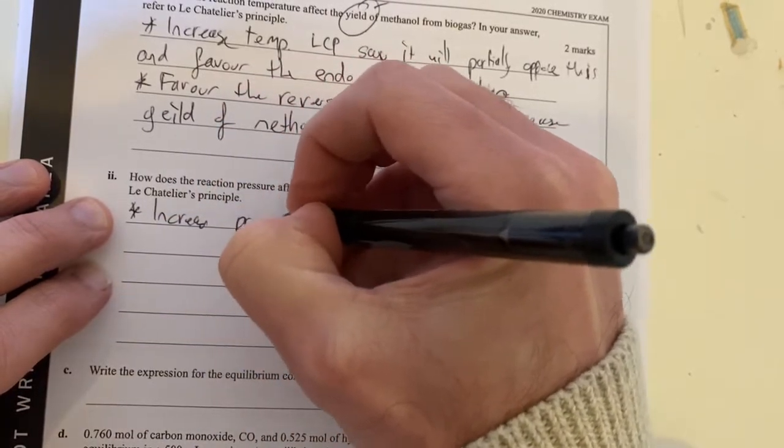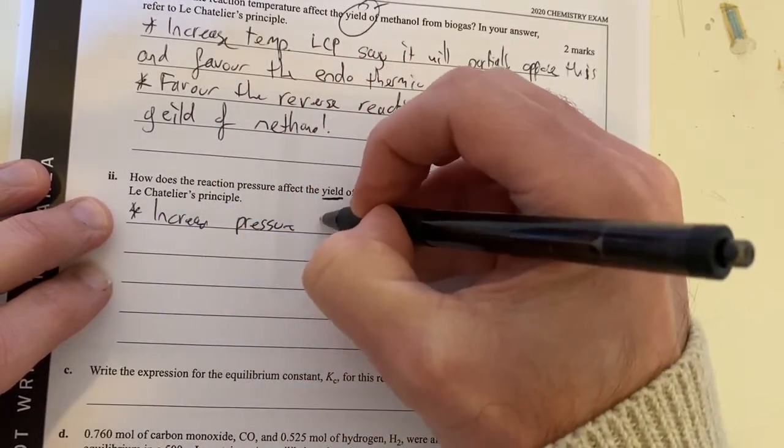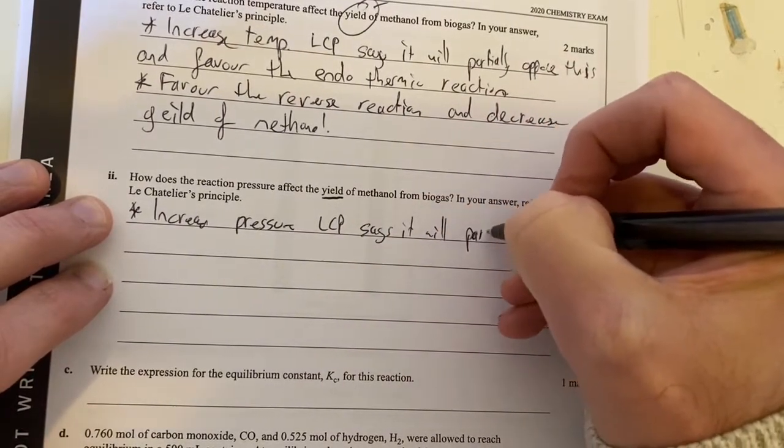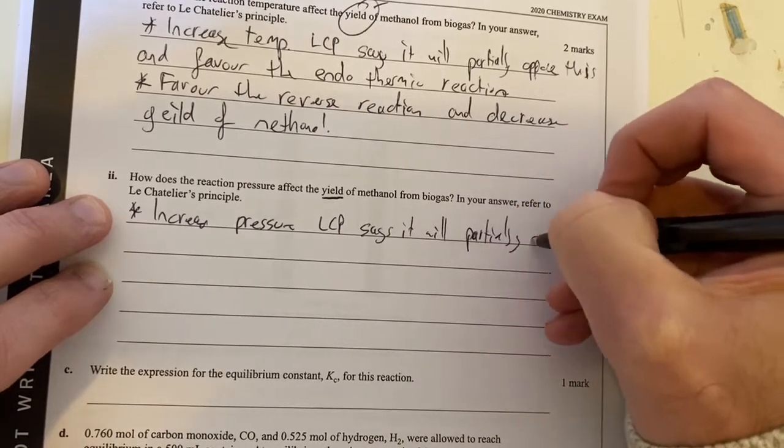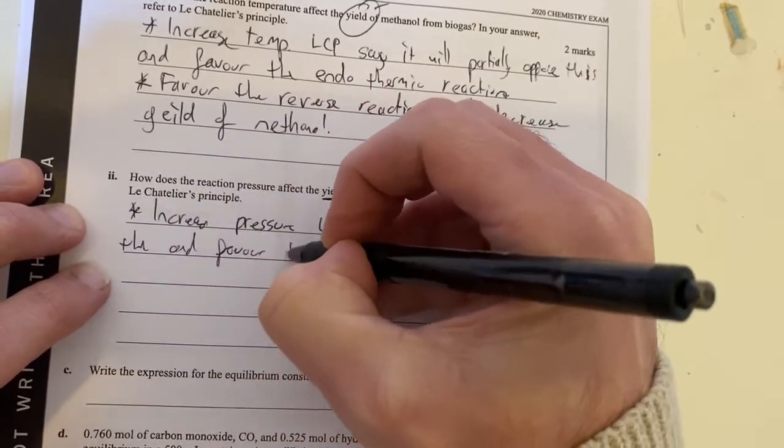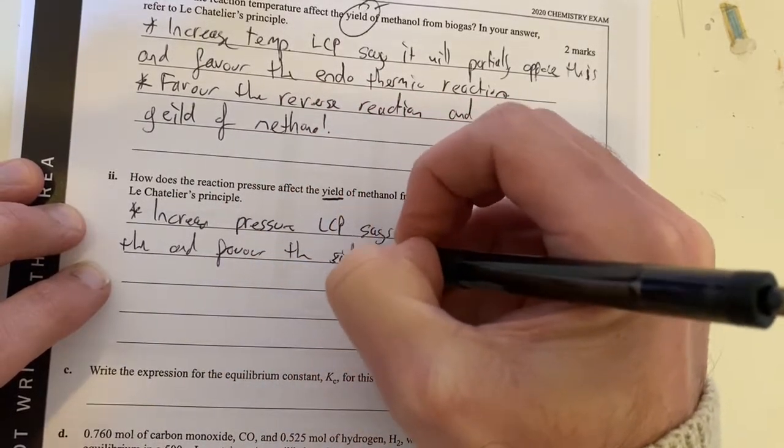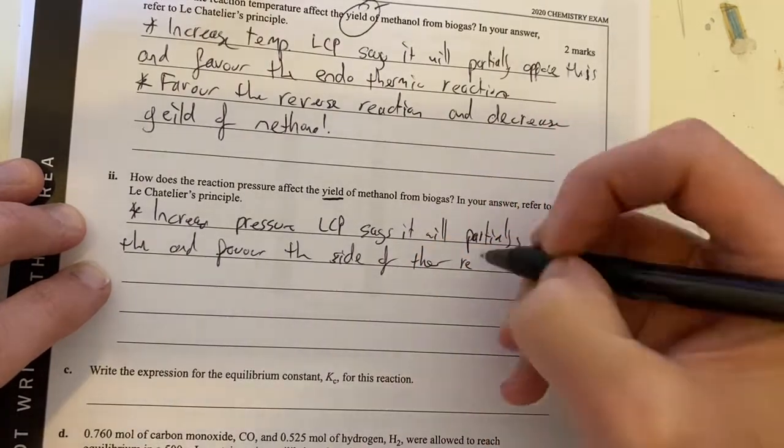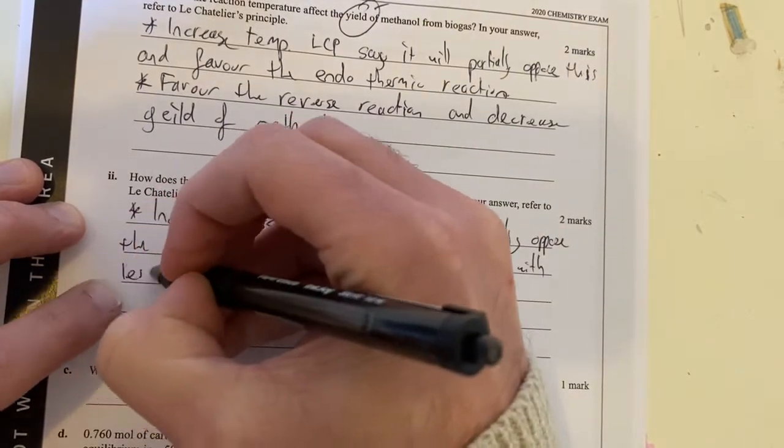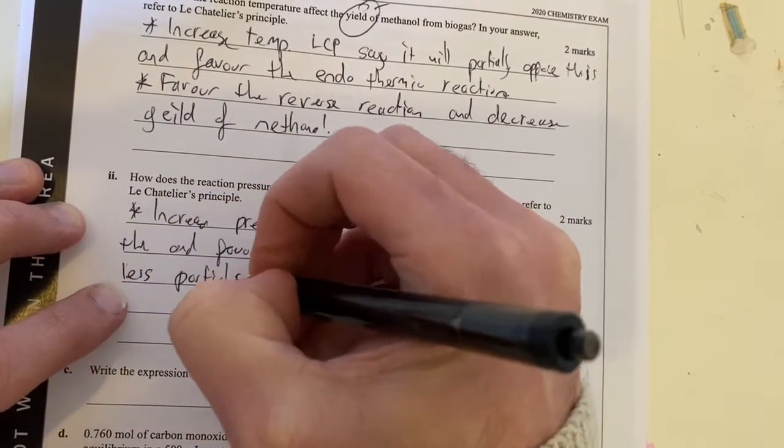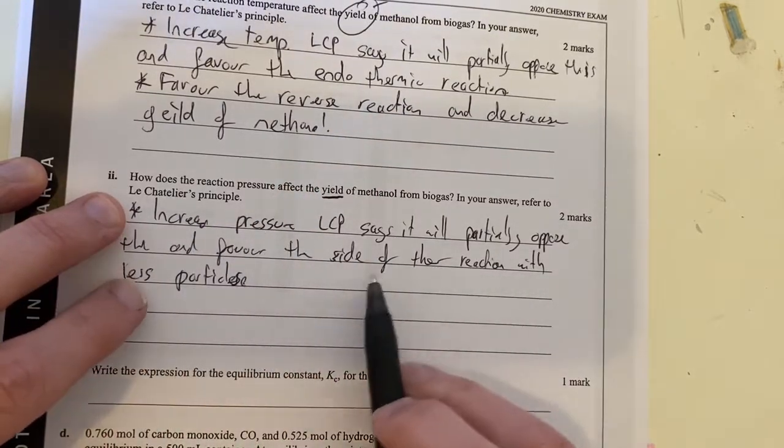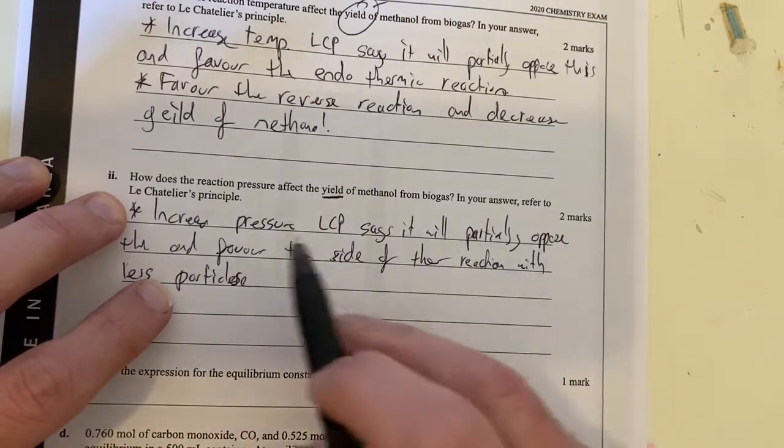Increase pressure, Le Chatelier's principle says it will partially oppose this and favour the side of the reaction with less particles. That's just key knowledge of Le Chatelier's principle. If you're increasing pressure, we're going to favour the side with less particles to decrease pressure, to partially oppose the increase in pressure.